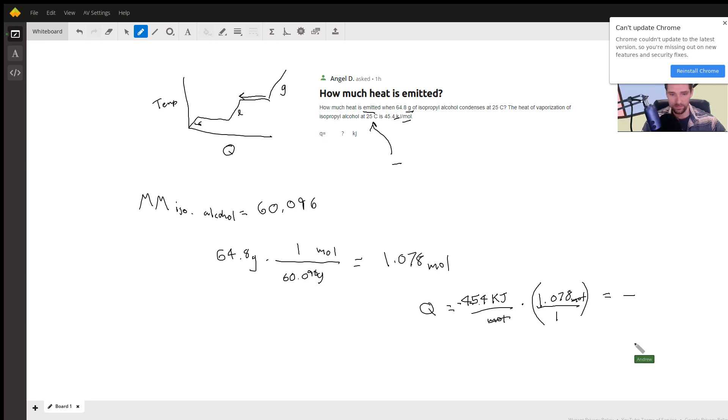So we get a negative 45.4 times 1.078, that gets us negative 48.9412, but we can round that. And it looks like they gave us three sig figs. We weren't really using the temperature in our conversions or anything, so it's really three sig figs that we're working with. So this is 48.9 kilojoules.